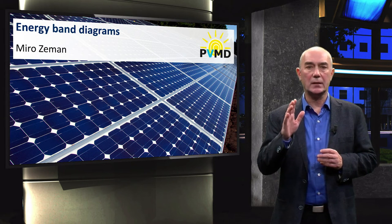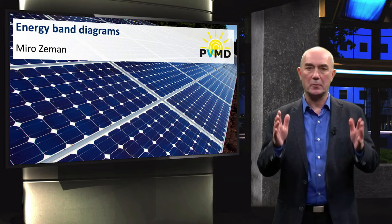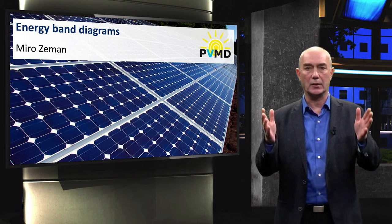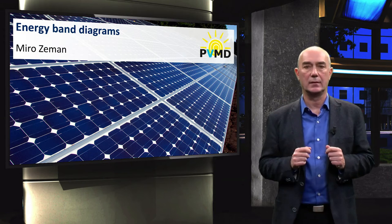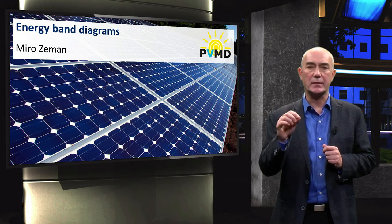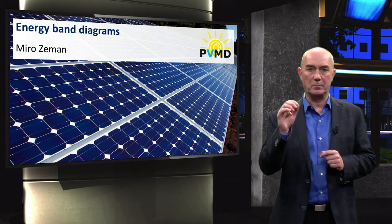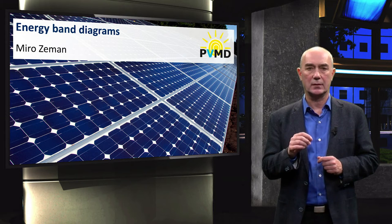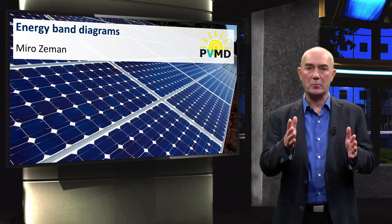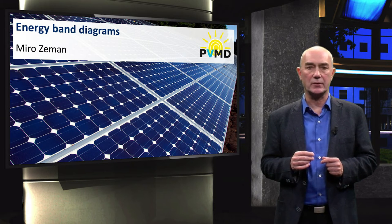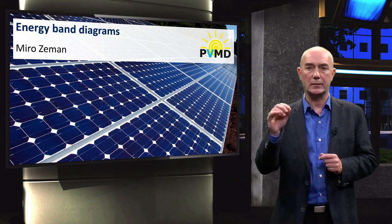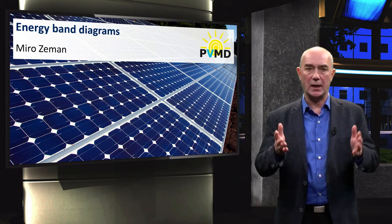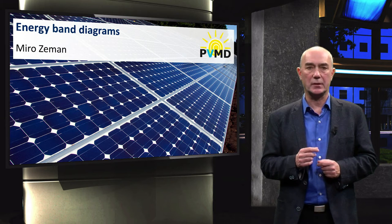By following a simplified quantum mechanical approach, we will show that the energy of electrons in semiconductors are grouped in bands. This video aims to understand the origins and the importance of electron energy bands for semiconductors. Specifically, we demonstrate how we visualize these energy levels in so-called energy band diagrams. Understanding band diagrams is of utmost importance for solar cell engineers.